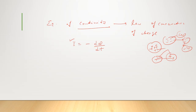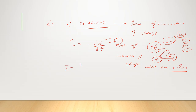Here I represents the current flowing out through a closed surface, and minus dQ/dt represents the rate of decrease of charge within the volume. This is equation number one. Also, current is related to current density by I = ∮J·dS. Current density J equals current per area.